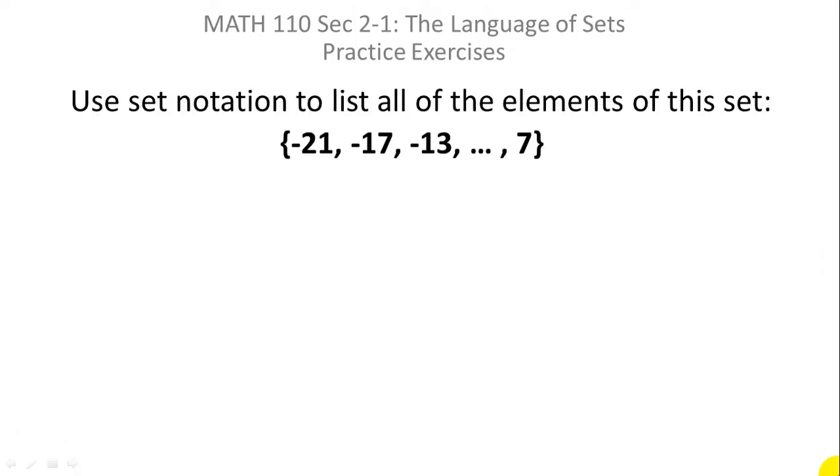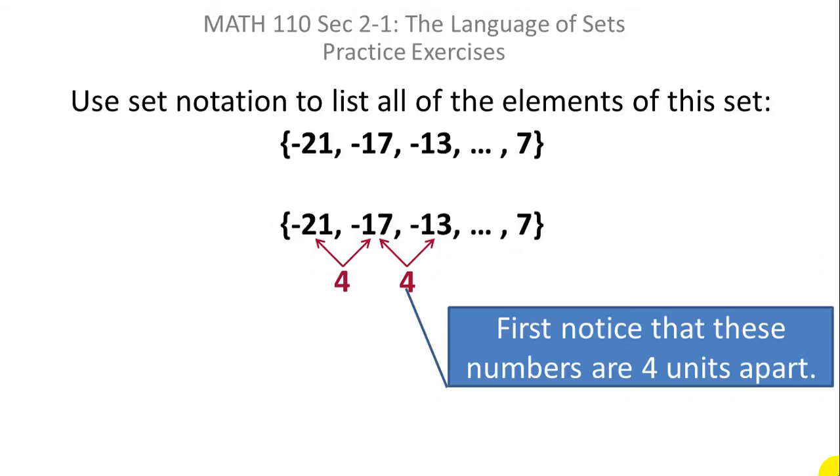And it's easy to see that each number is four greater than the one before. In other words the difference between two consecutive numbers is four. If you look at the difference between minus 21 and minus 17 that's four. Between minus 17 and minus 13 that's four.